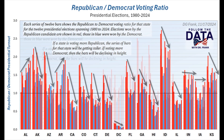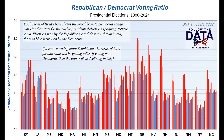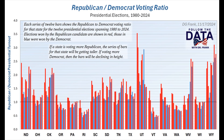Here are the next 17 states. Again, the trend is clear: the country as a whole is steadily voting less Republican. And here is the final set of 17 states. Note that Pennsylvania barely eked out a victory for Trump. If Kamala's turnout had not fallen versus Biden's turnout four years earlier, Pennsylvania would have experienced a different outcome.